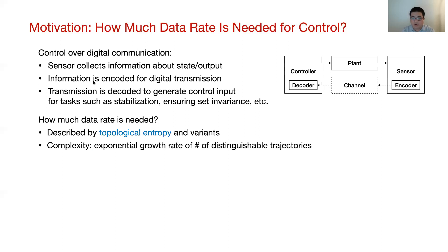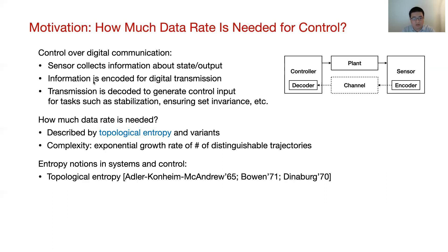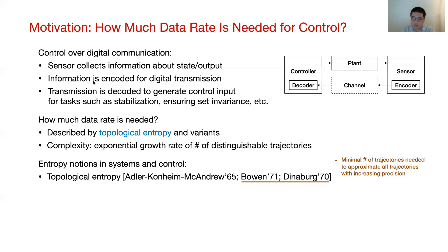The answer to this question is described by the concept of topological entropy and its variants. Topological entropy is a non-negative number that measures the complexity of a dynamical system. Roughly speaking, it measures the exponential growth rate of the number of distinguishable trajectories as time evolves. I will briefly summarize some literature on entropy notions in systems and control closely related to our work. Topological entropy was first defined for discrete-time autonomous systems in the 1960s by Adler and others. Our work follows an alternative definition introduced in the 1970s by Bowen, which utilizes the minimum number of trajectories needed to approximate all trajectories with increasing precision. There is a clear connection between this definition and the data rate requirement for encoding state information.